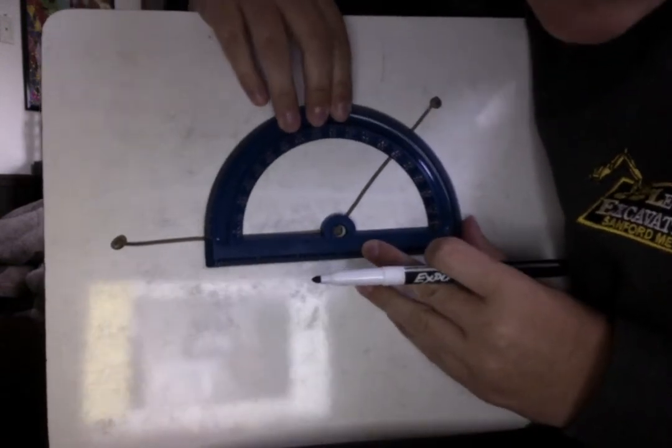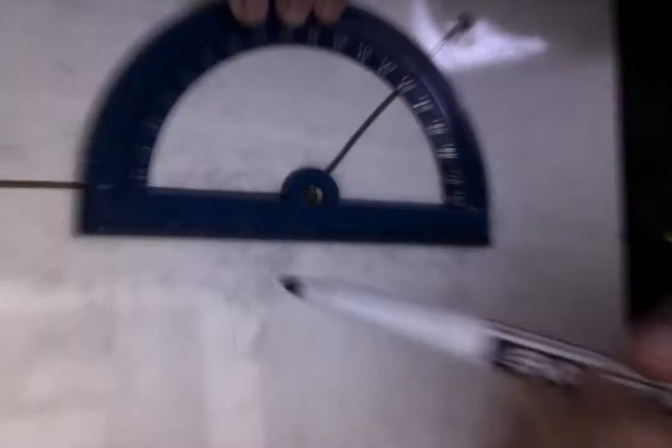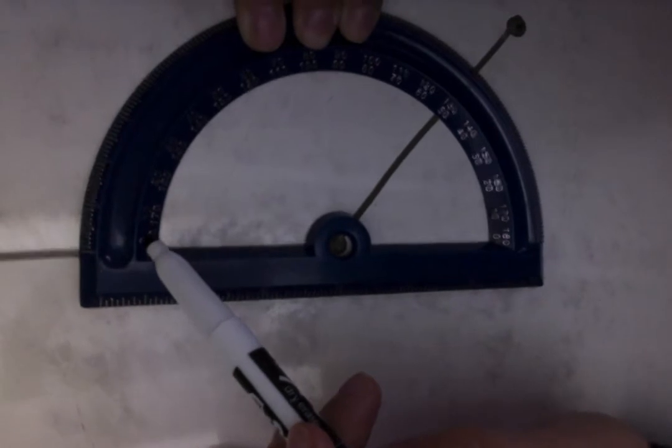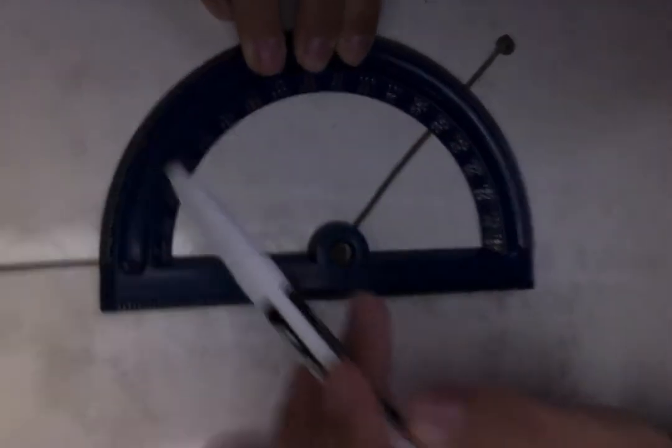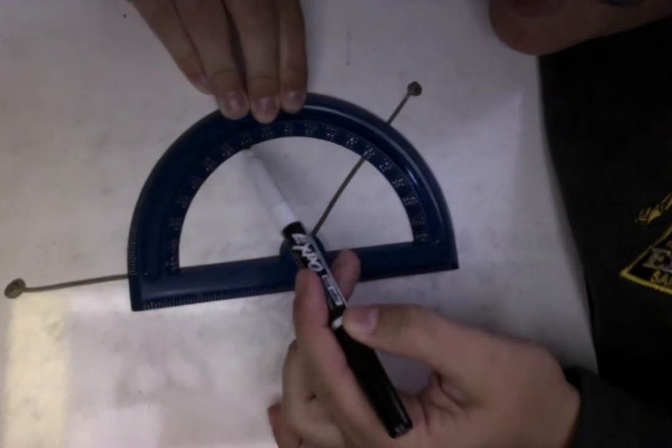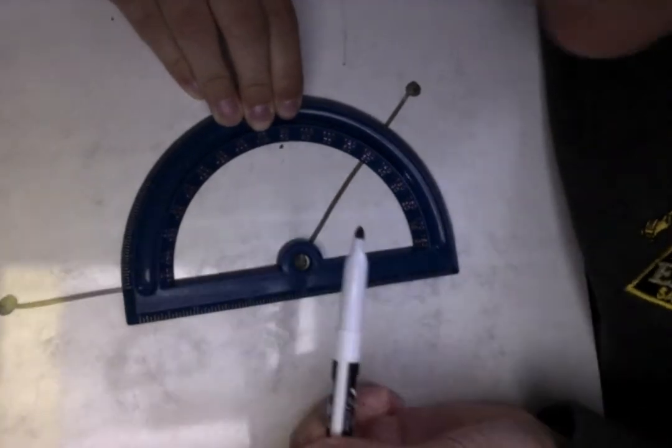I'm gonna line up my protractor so that my vertex goes in here and the baseline lines up with the protractor. Okay so like so and then you can see I have 0 and 180. I'm always starting at the 0 so this one, if the 0 is on the outside I'm going to use the outer angle. 0, 10, 20, 30, 40, 50, 60, 70, 80, 90 is right here.